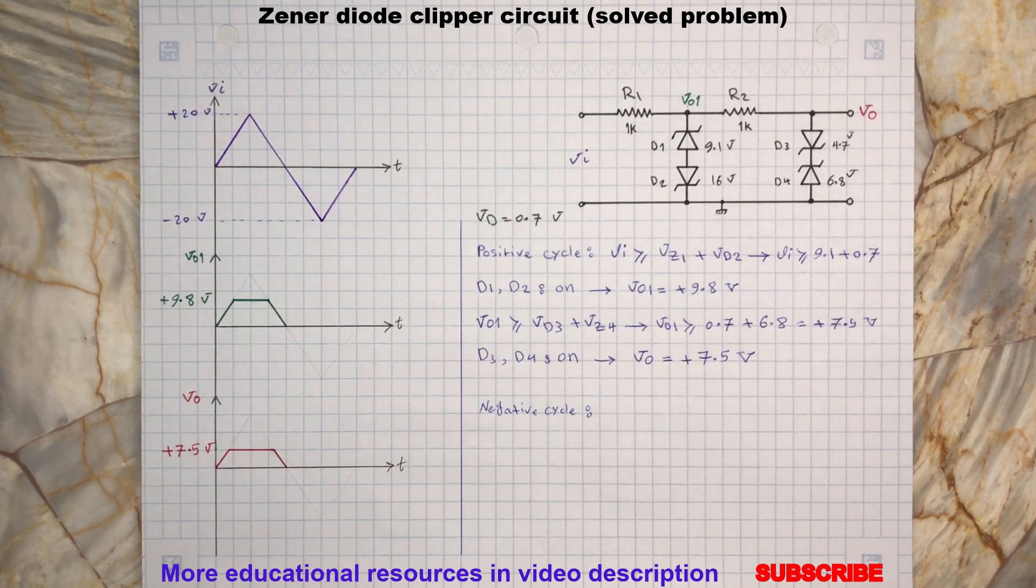D1 and D2 will turn on and hold the voltage constant at minus 16.7 volt at the vo1 terminal.